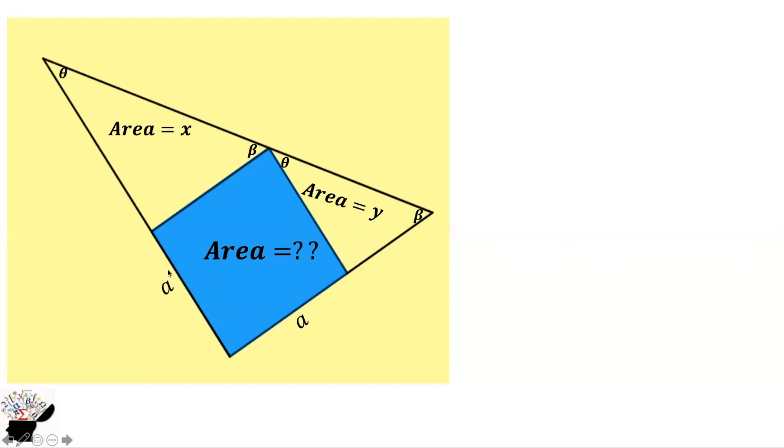We can label this part and this part. This one is a, this one is c, this side is c, and also this side is d.